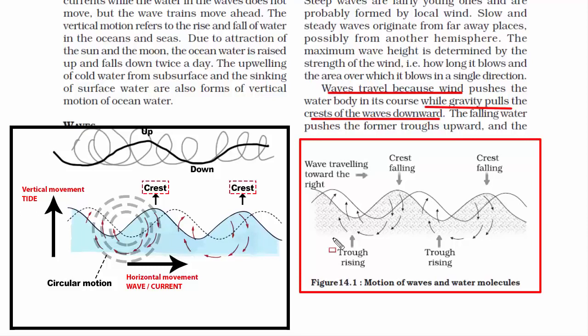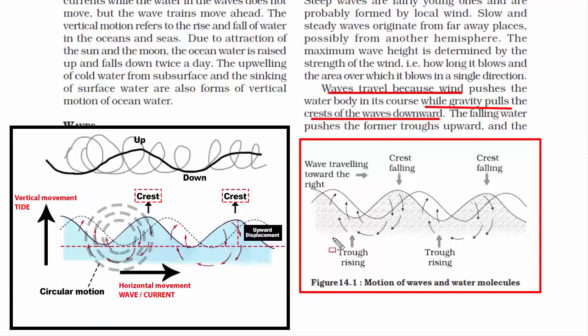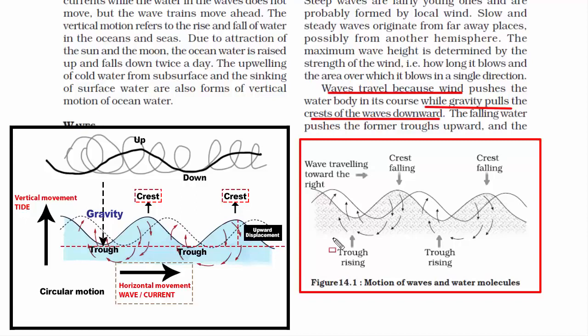The crest is a point on the wave where the water has the maximum upward displacement — this happens because of the wind. Likewise, there is something called the trough, which is the lowest point of water displacement, and it exists because of gravity. When the water rises, it forms a crest; when it falls, it forms a trough, and then it pushes back up again to become a crest. This goes on over and over, and that's how waves travel horizontally in a circular motion.